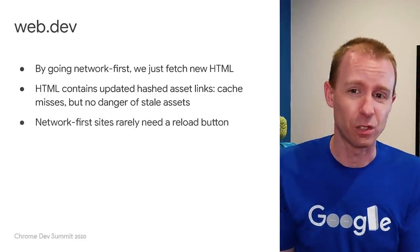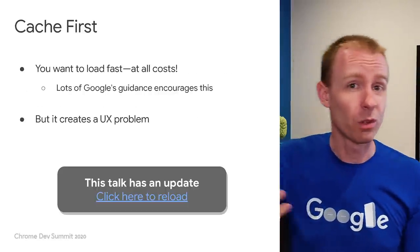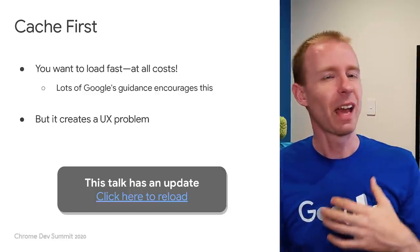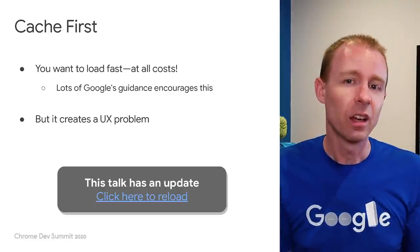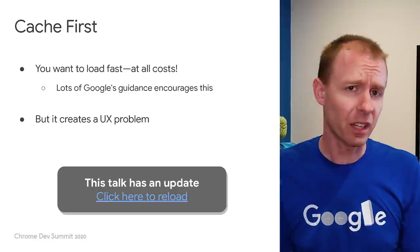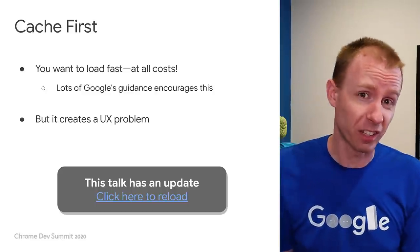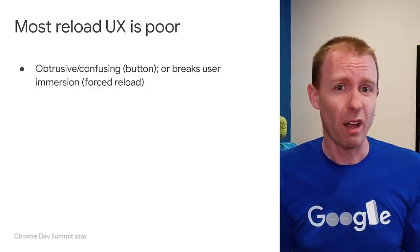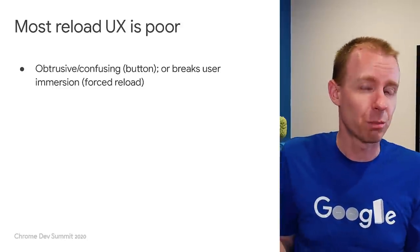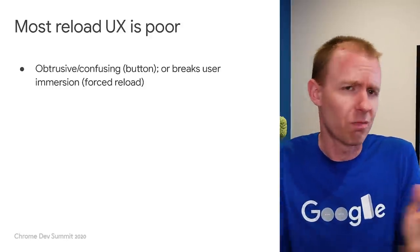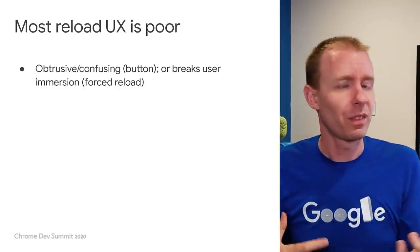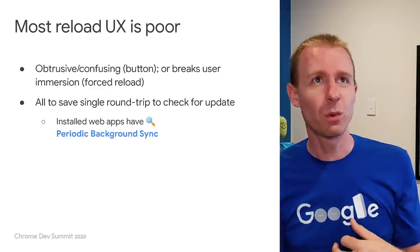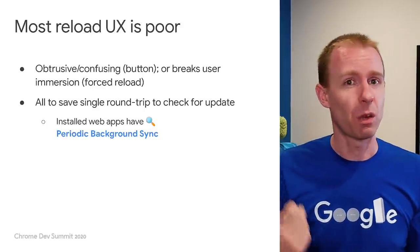Most of the advice I've given applies here — we have a service worker cache for immutable assets, but otherwise you'll only get the newest, freshest content, and we don't have weird UX issues or need a reload button. If you go cache-first, it's very common to have this UX problem — a big sign of a service worker-driven site. When you make this decision to show a reload UI, you're fundamentally saying: I want to load fast at all costs. There's nothing inherently wrong with that, but most reload UX is just not that good. The average user ignores it — websites don't work like this in their mental model. That button exists for a single reason: you're trying to avoid a single round trip to check for an update.